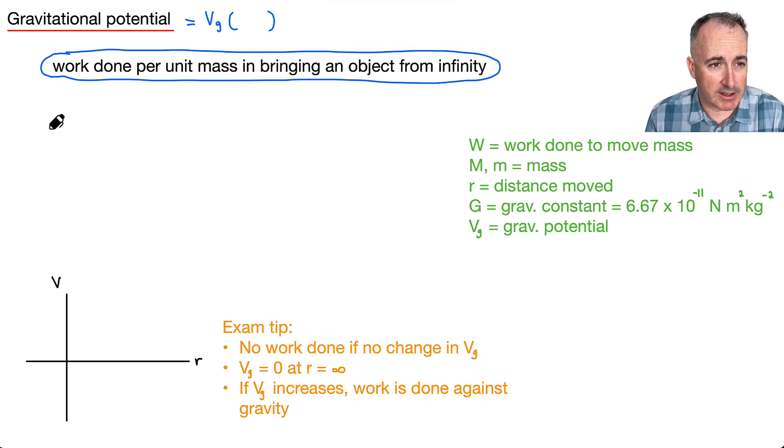So it's work done. That's a form of energy per unit mass to bring an object from infinity. Well that means then that we have our equation from our data booklet. It goes like this. So it's going to be just like the gravitational potential energy. So minus GMm over r, except we divide by m. So it's just going to be GM over r. This is going to be one of them.